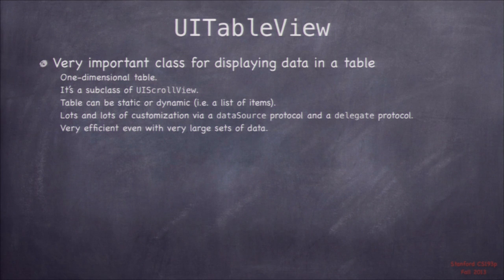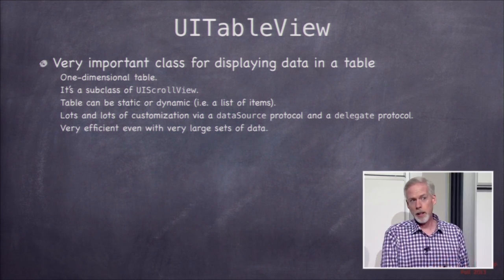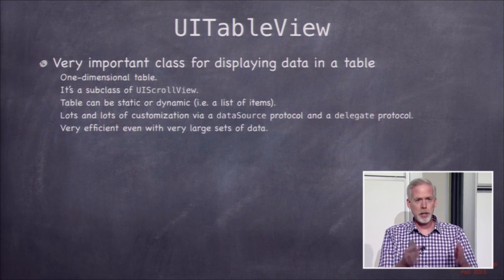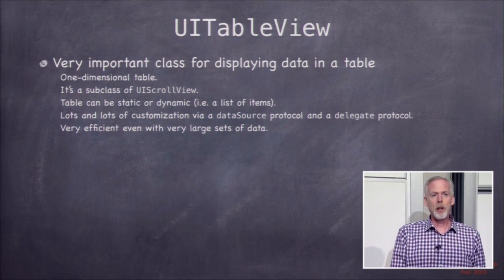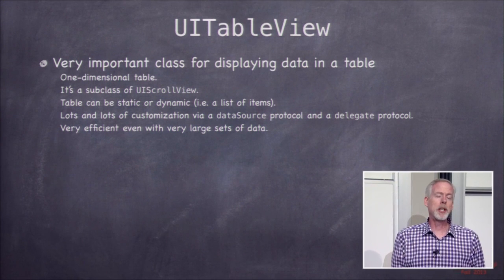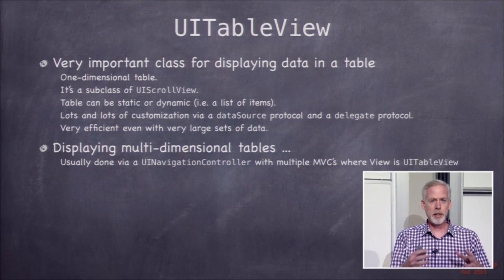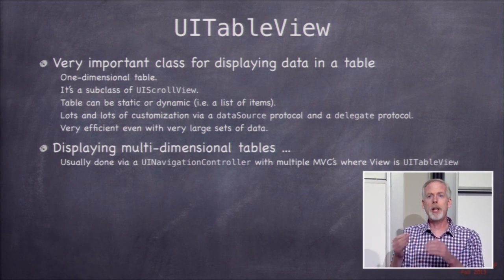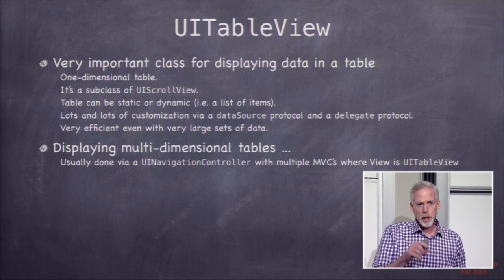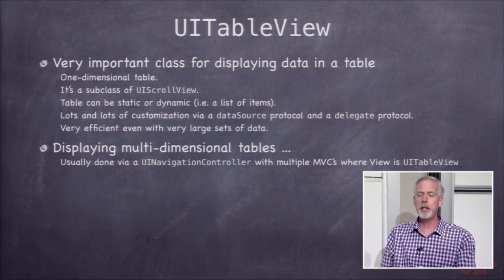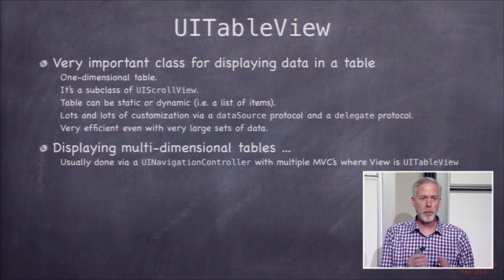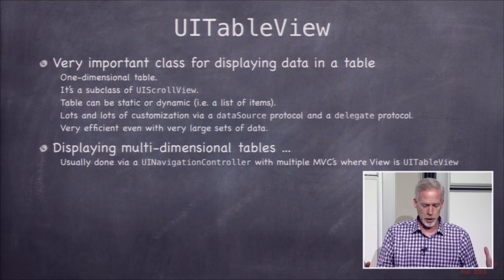Let's dive right into table view. This is a very important class because a lot of the data you need to display in your applications comes in the form of a list. Table view is basically a list view — it's one-dimensional, not like a matrix or spreadsheet. Although it can be divided into sections, when we want to display multi-dimensional things we just put multiple table views into navigation controllers, so users touch rows and we slide in the next column.